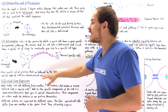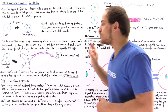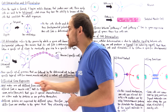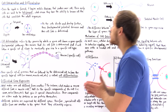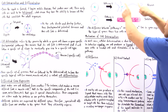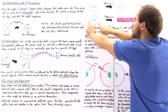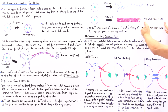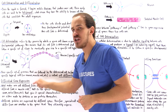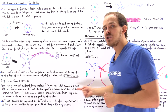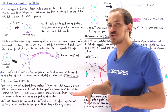What differentiates pathway one from pathway two is the type of genes that are expressed and the type of proteins that are formed. This is known as differential gene expression, and it is differential gene expression that allows cell differentiation to actually take place.